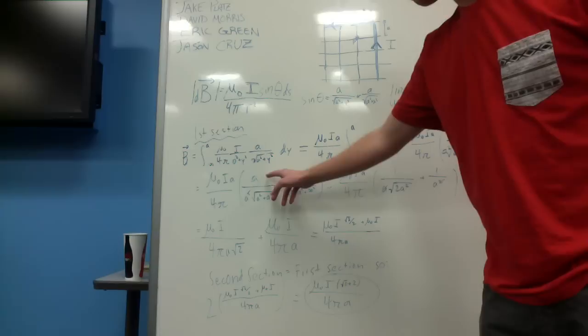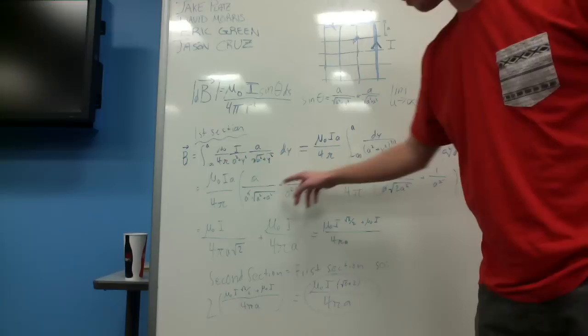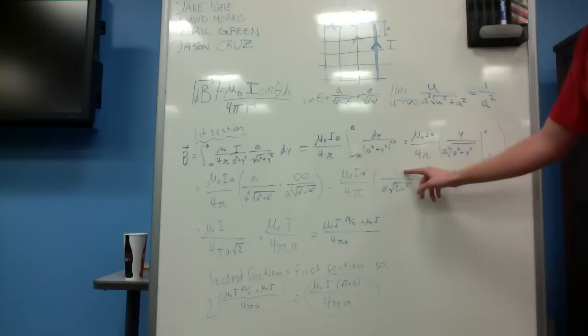And so then we just plug in the variables and we solve the constant outside. We plug in A for y right here, and so then this A crosses off with an A on the bottom and an A over here. And then we just plug in infinity over here. And using this limit right here, we can determine that that is equal to 1 over A squared.